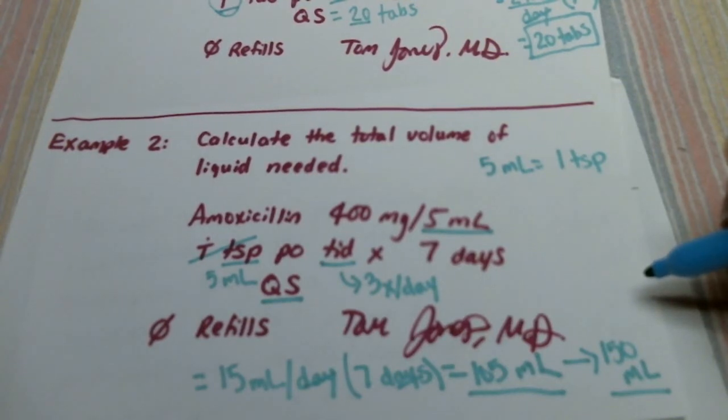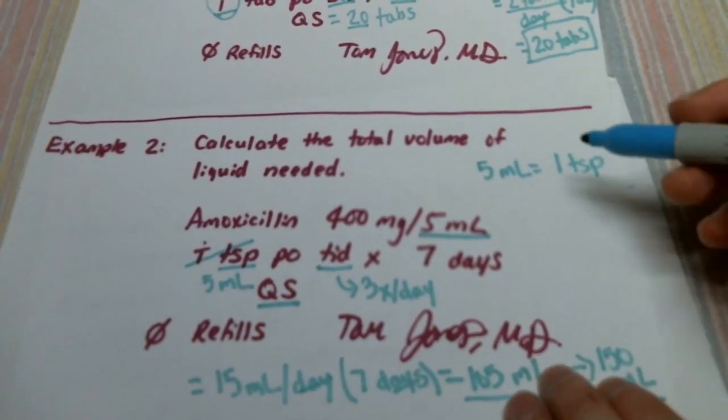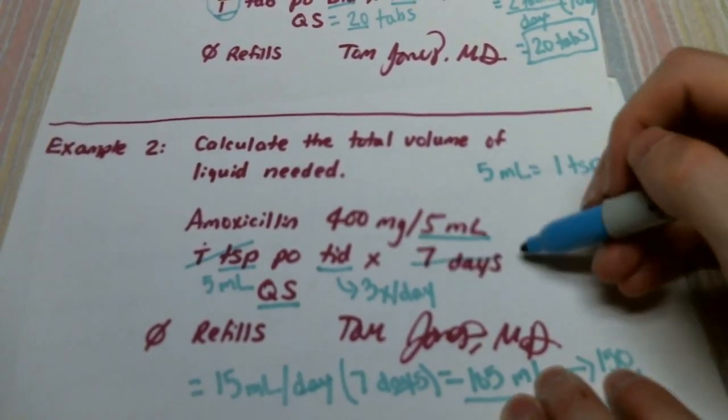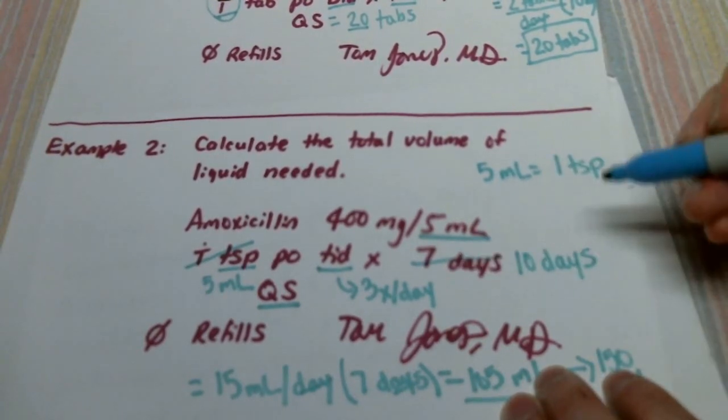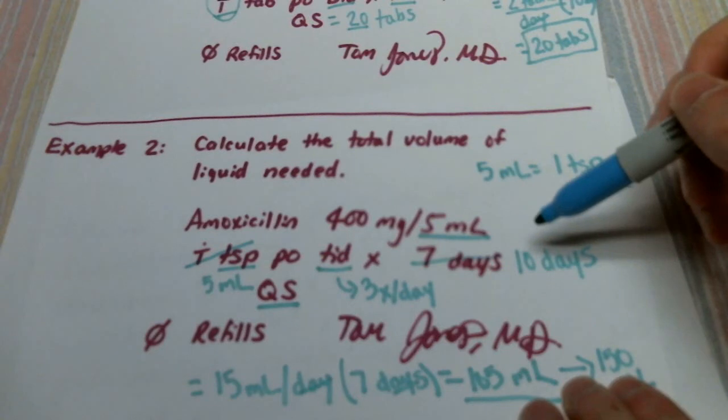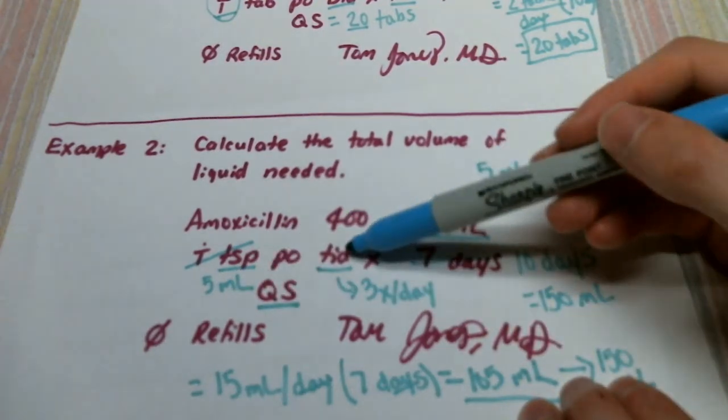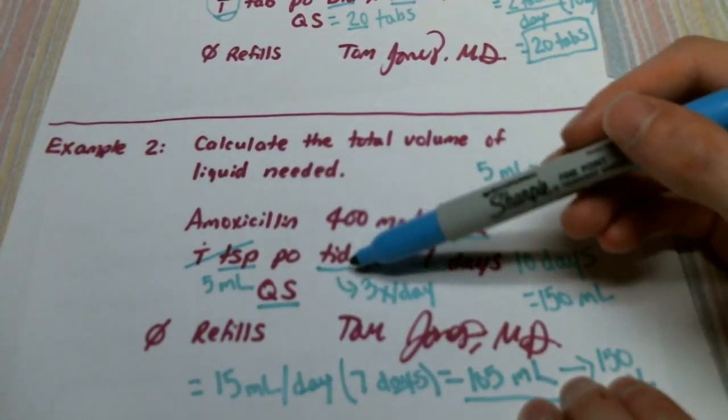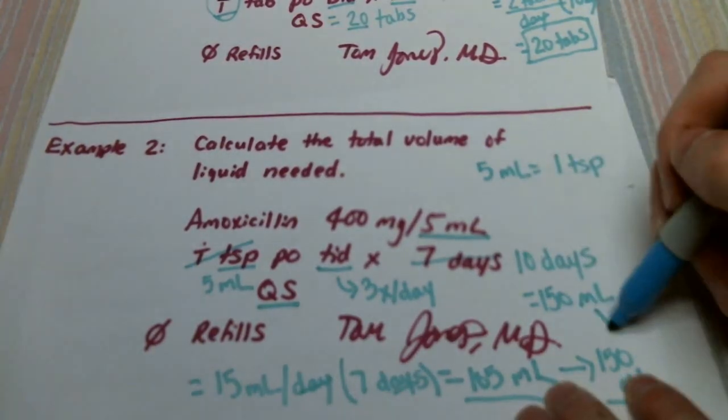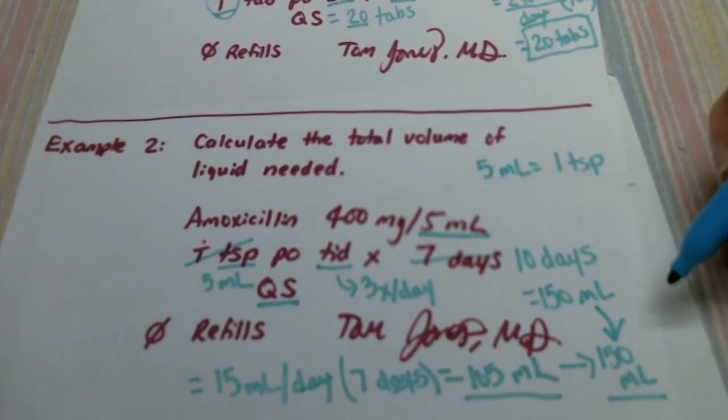Sometimes what you'll see, in fact most of the time, you'll actually see the prescriber write for a total dosage amount for the entire course that equals the volume available commercially. So sometimes you'll see instead of seven days, you'll see ten days. And if we multiply this out, ten days instead, we now get 150 mLs. Just take the five times three times a day is fifteen mLs a day times ten days is 150 mLs, and it turns out that is a strength that is available commercially.